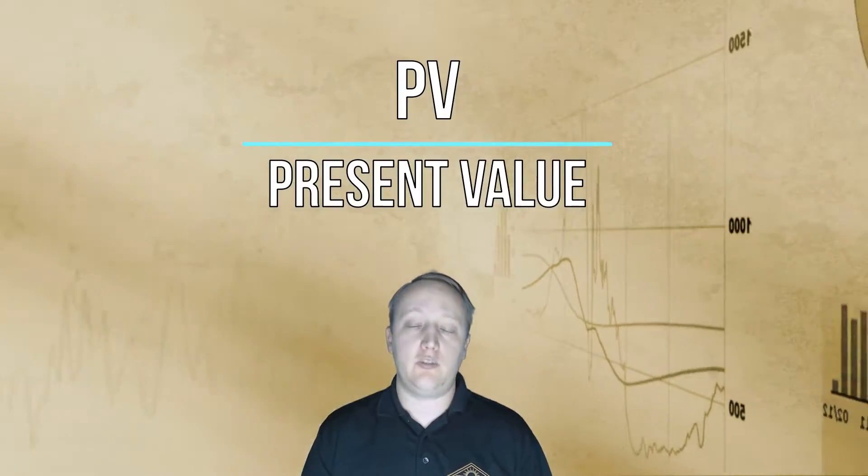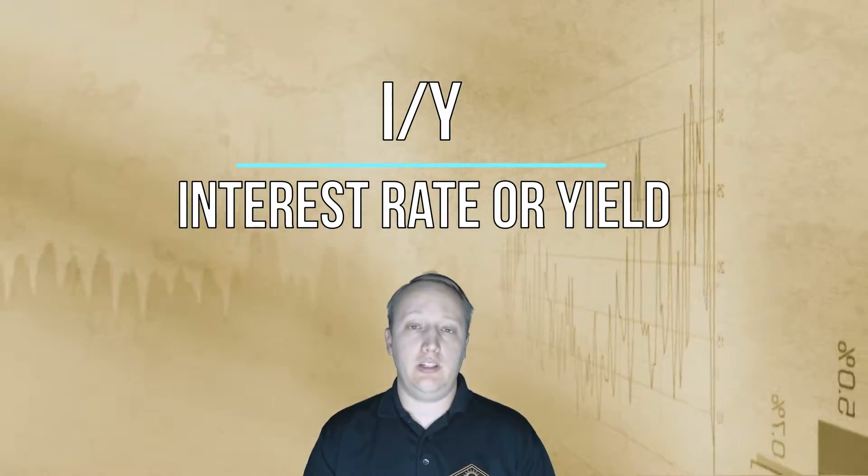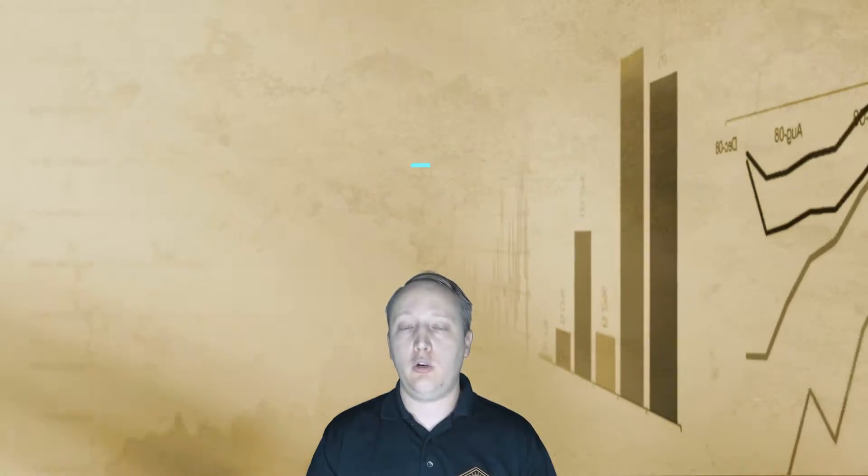Basic components of a yield calculation are going to be the PV, which stands for present value, the I/Y, which stands for the interest rate over a year. You can change that, but you're going to want to calculate the annual yield usually.